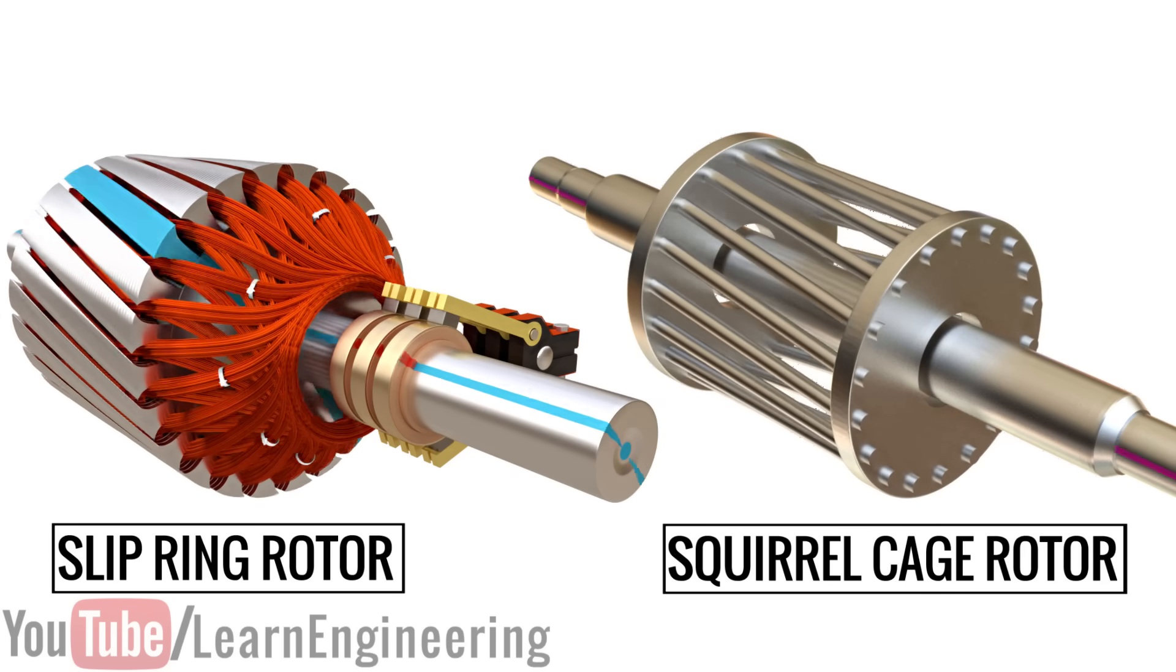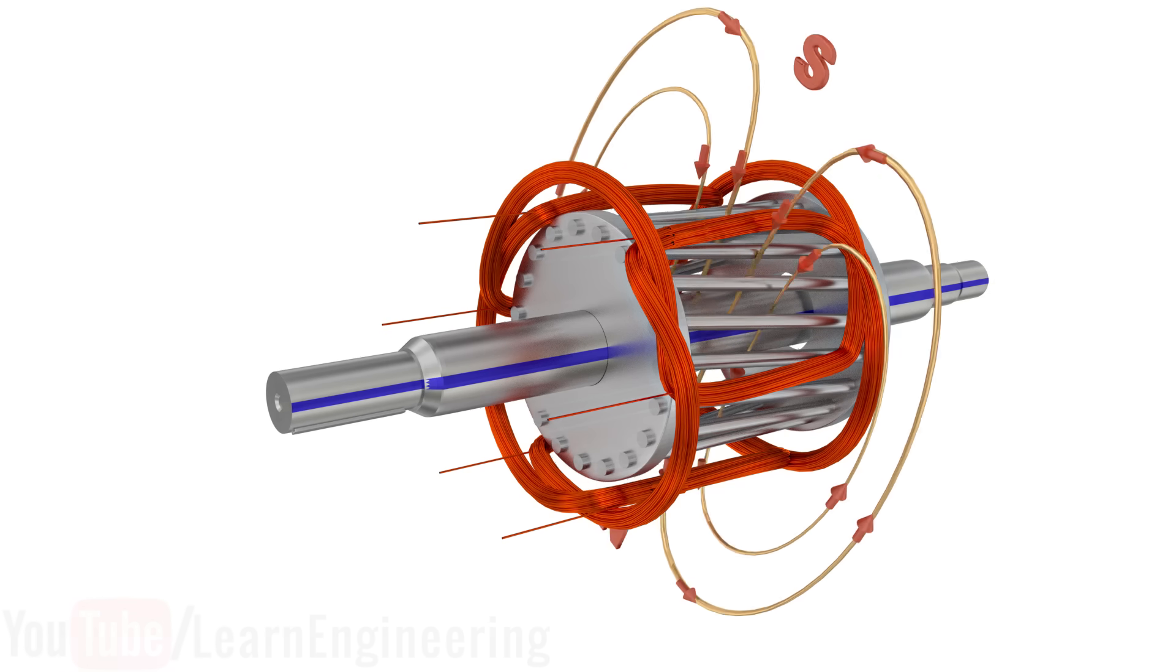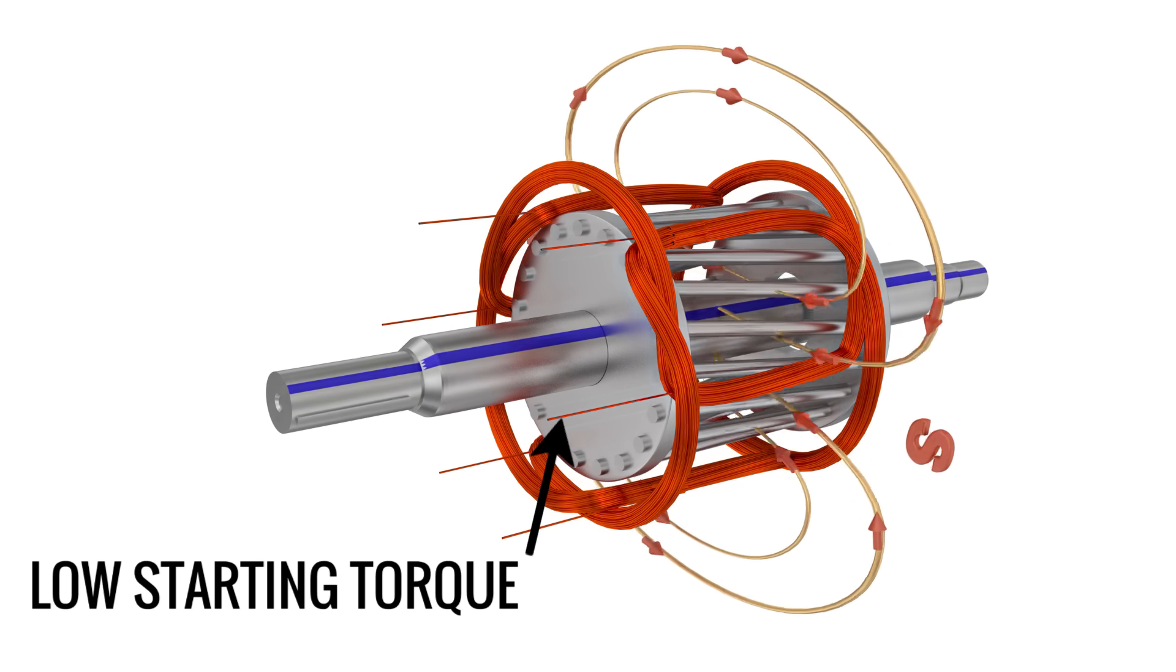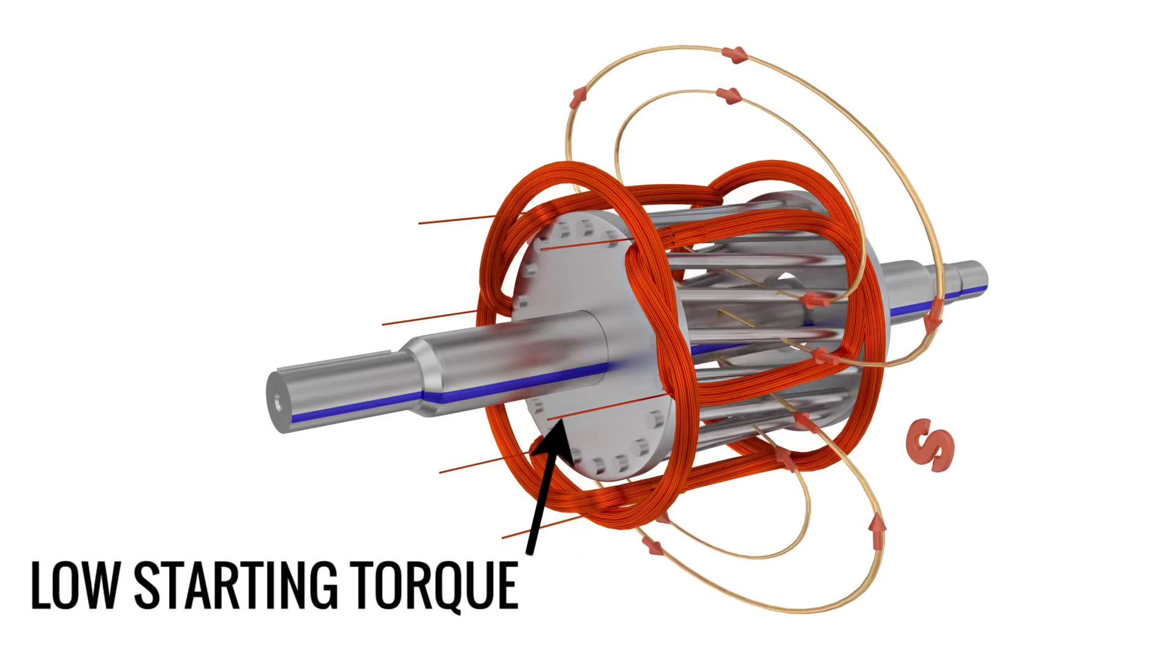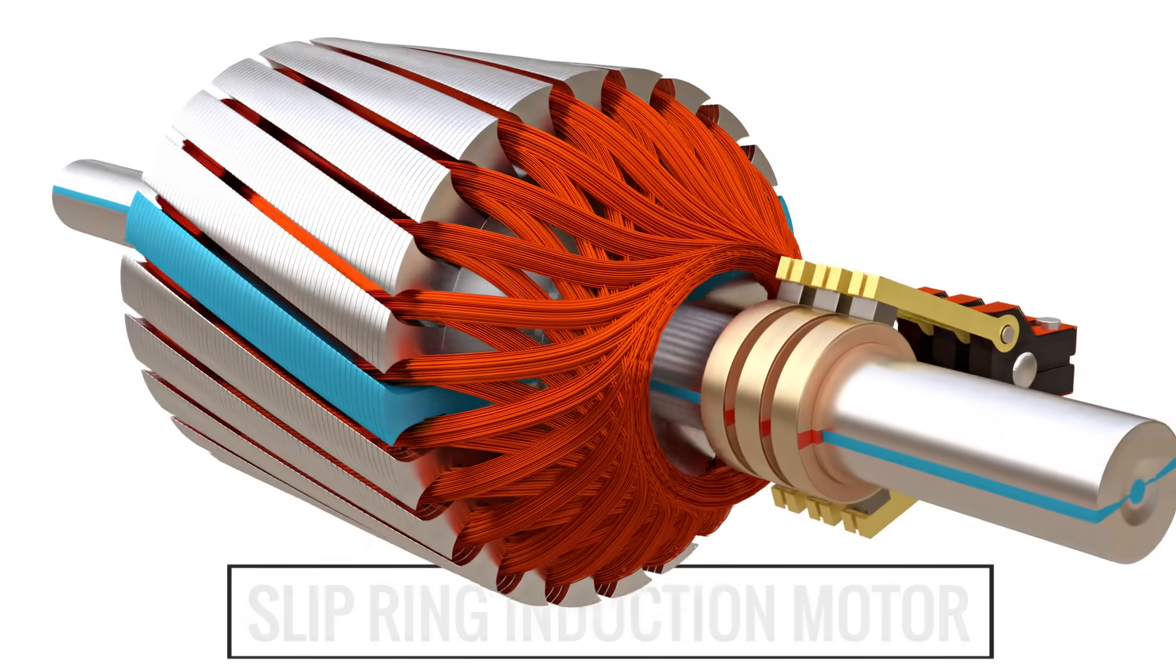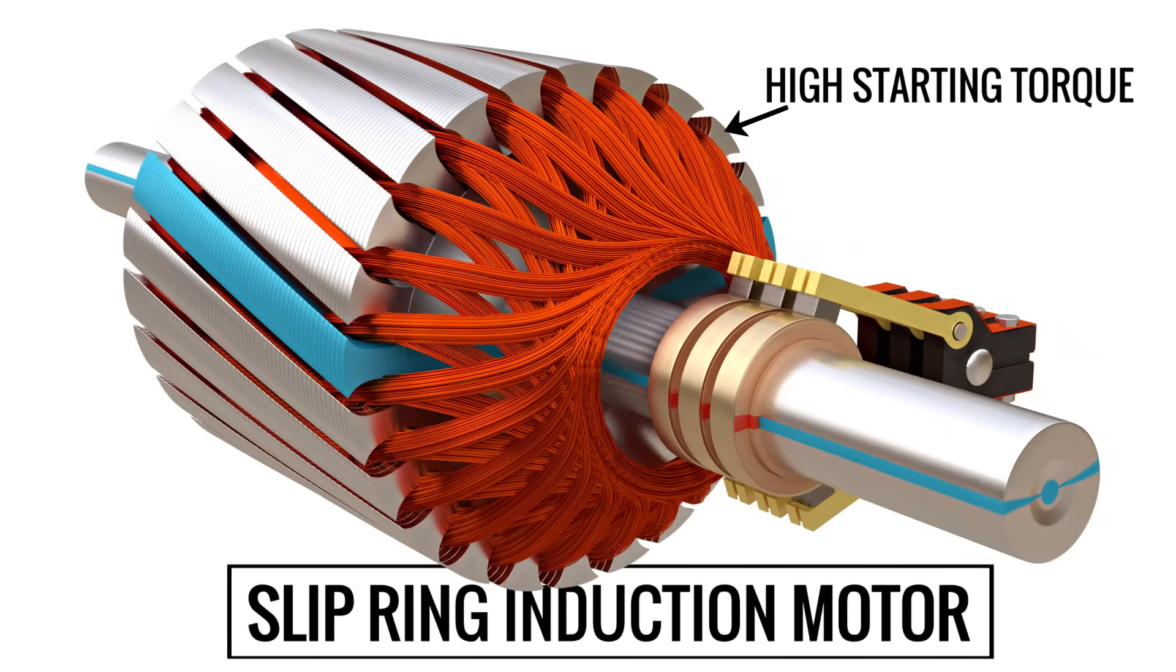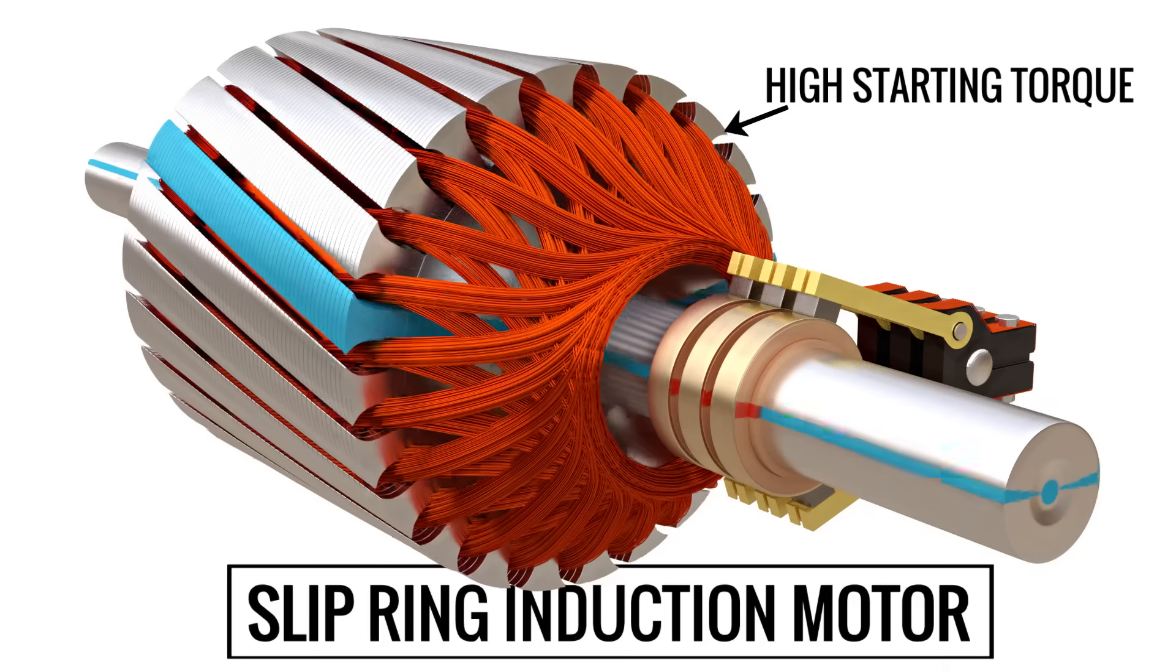We will explore this in the video. Normal induction motors or squirrel cage type motors produce a very low starting torque, and for some applications, this low starting torque will cause huge problems. It is in these circumstances that slip ring induction motors are used, as they produce high starting torque. Let's see this in detail.